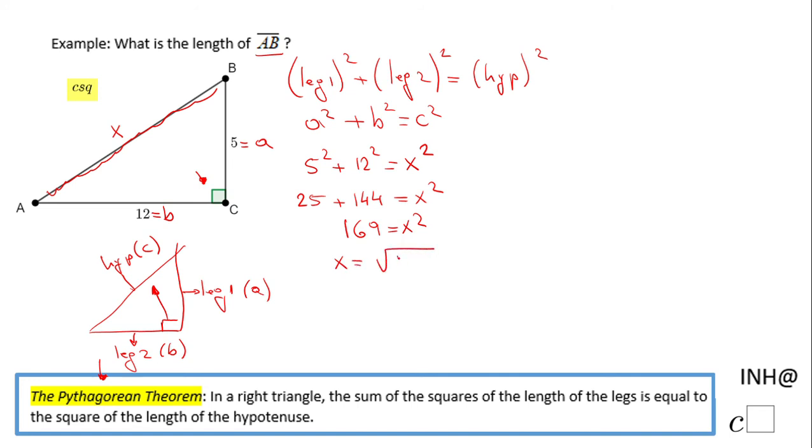And the last step for finding x is to take the square root of 169. And since this is talking about geometry, a length of a segment, I don't need to put a plus and minus, just the positive value. And square root of 169 is 13. So basically AB, the segment we're looking for, has a measure of 13.